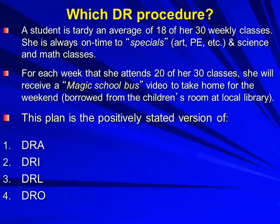We have a youngster who is tardy an average of 18 of her 30 weekly classes — always on time for art, PE, etc. From our investigation, she also likes science and math classes. We come up with a criterion: if she attends 20 out of her 30 classes — two-thirds of them — she'll receive a video of her favorite science program, the Magic School Bus, to take home for a weekend. Which DR procedure have we implemented? You can't be absent if you're attending, but we're not requiring that all of the time. We're actually lowering the number of tardies, but we've stated it in a positive way.